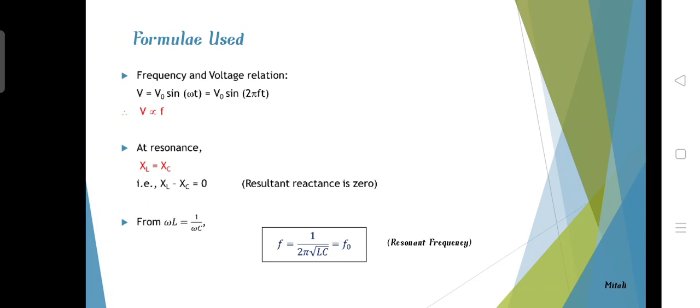XL is equal to Xc, which means that the inductive reactance is equal to the capacitive reactance. When XL equals Xc, omega L equals 1 by omega C. This gives omega square equals 1 by under root LC. This means that the frequency 2 pi F equals 1 by 2 pi under root LC, and this is called the resonant frequency.